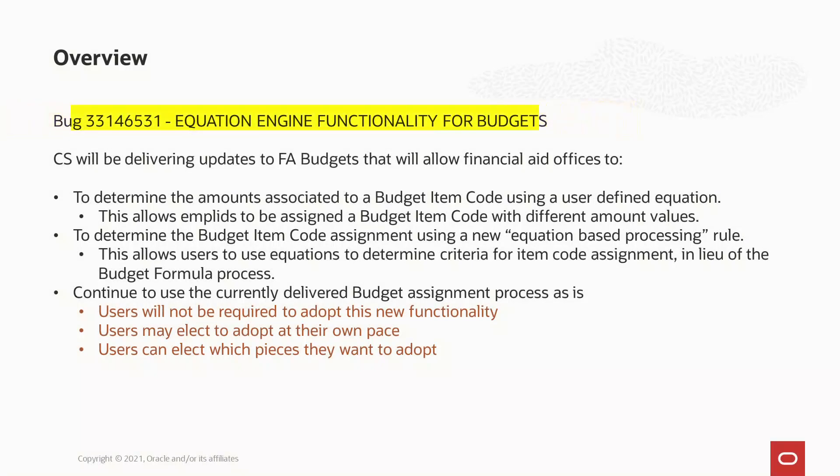PUM 28 includes bug 33146531, Equation Engine Functionality for Budgets. This will allow for selective adoption of Equation Engine in the batch and online budget processes. The updates provided in this bug will allow financial aid offices to determine the amounts associated to a budget item code using a user-defined equation, to determine the budget item code assignment using a user-defined equation and a new equation-based processing rule for assignment, and it will allow financial aid offices to decide if or when they want to adopt this new functionality.